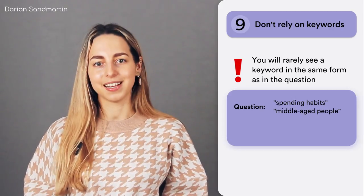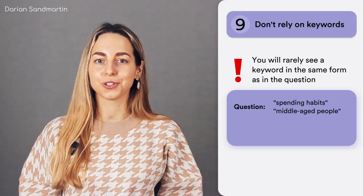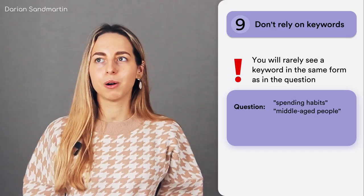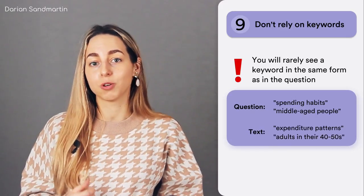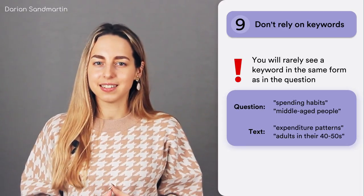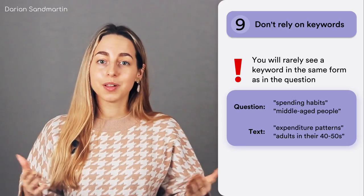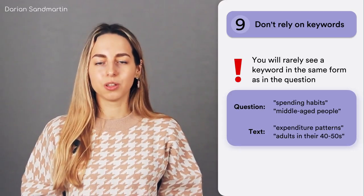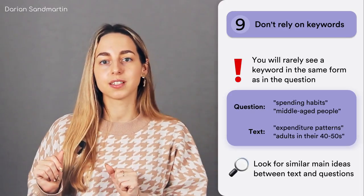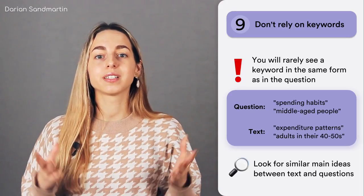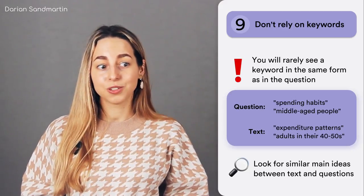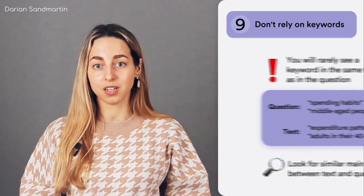Chances are you will not see the same wording in the passage. Most likely, when reading the text, you'll encounter something about the expenditure patterns of adults in their 40s and 50s. While the main idea of these sentences is the same, the vocabulary is different. Therefore, you must be on the lookout for similar main ideas between the text and the questions. Mind the context, meanings and of course synonyms, because the majority of ideas are paraphrased and do not appear the same throughout the passage and tasks.